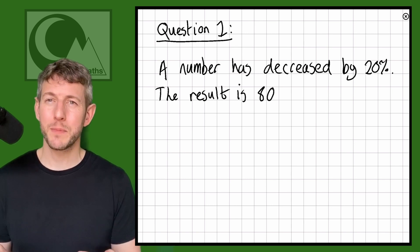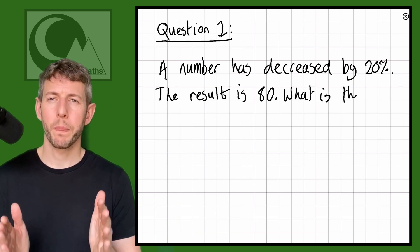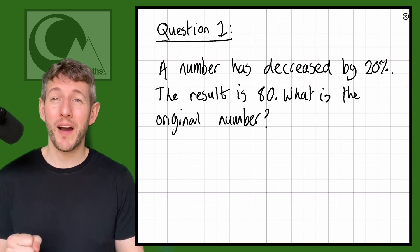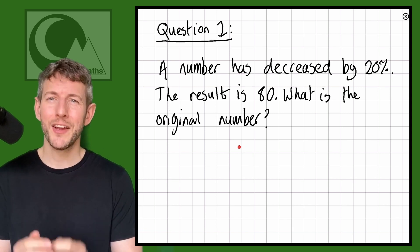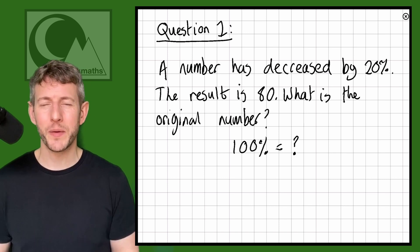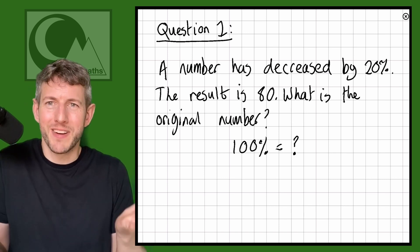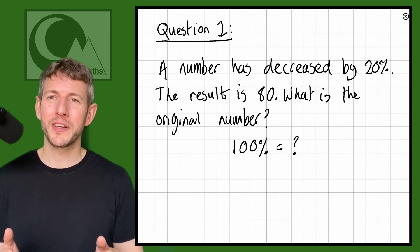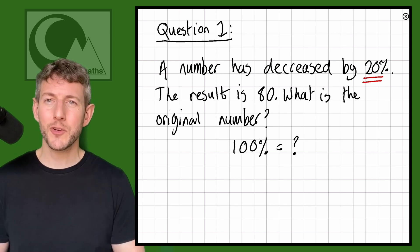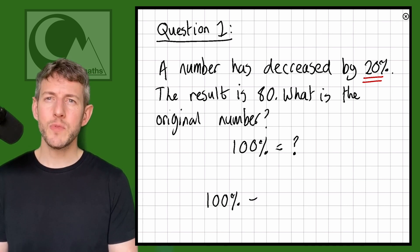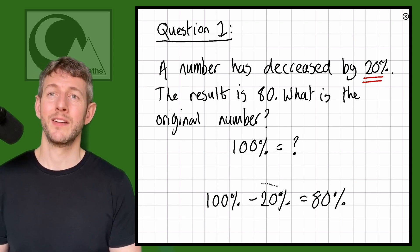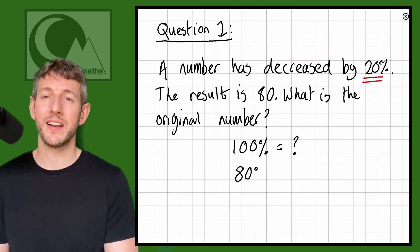So let's look at this question: a number has decreased by 20% and the result is 80. What is the original number? With percentages, I always like to start by identifying the 100%. In this case, 100% is what we need to find out, but I'm going to write it at the top anyway: 100% equals mystery. The 100% was decreased by 20%, so we're left with 80%. So we know that 80% equals 80.